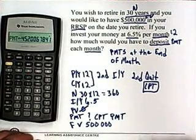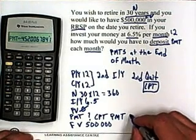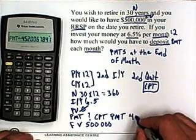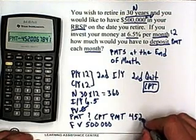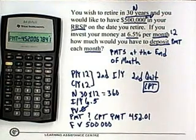And there we go. We have to deposit, at the end of each month, $452.01 in order to have $500,000 when we retire in 30 years.